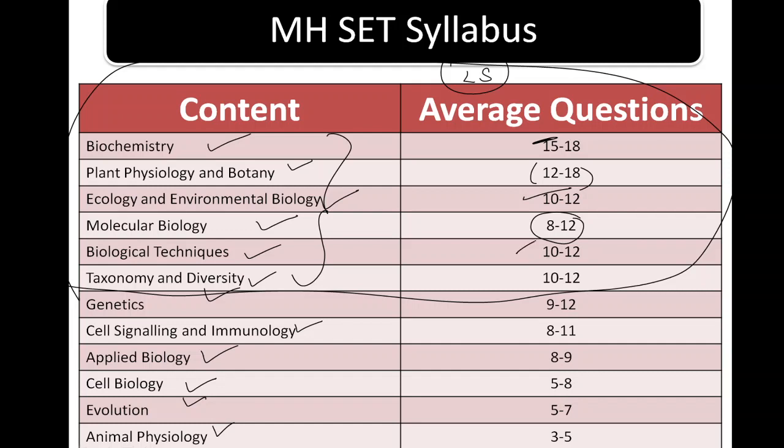For biological techniques, 10 to 12 questions. In taxonomy, 10 to 12. And if you don't cover this syllabus, then you will read the whole topic.